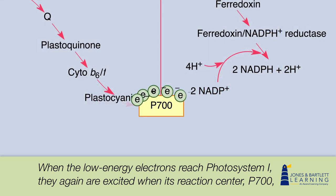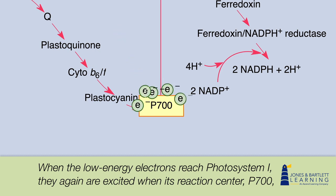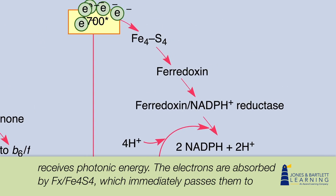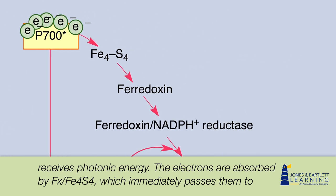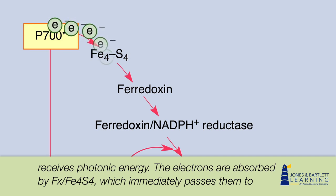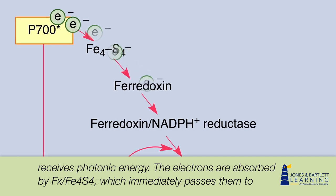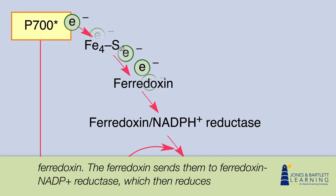When the low energy electrons reach photosystem 1, they again are excited when its reaction center, P700, receives photonic energy. The electrons are absorbed by FX-Fe4S4, which immediately passes them to ferredoxin.